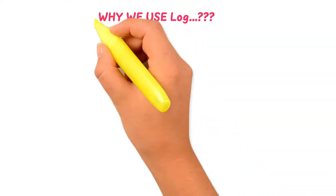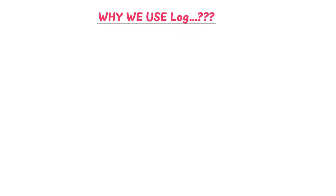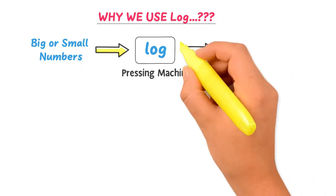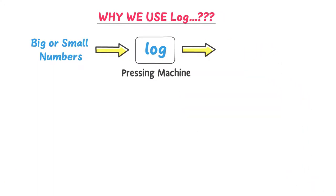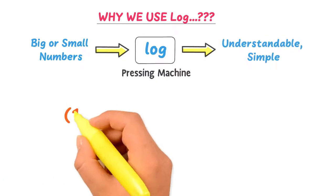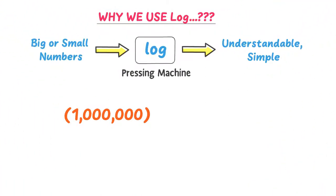Now why do we use log when deriving the equation of sound intensity level, or the Weber-Fechner law? The function of log in any equation is that it acts like a pressing machine. When we input a very big or very small number into log, it converts it into something we can easily understand. For example, consider a very large number — if I take log base 10 of this number, it converts it to something very simple.